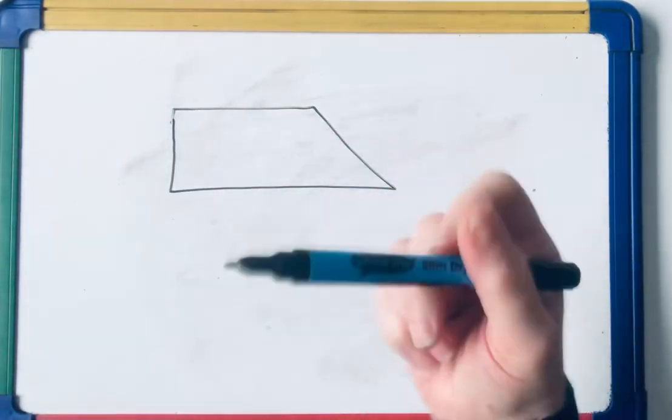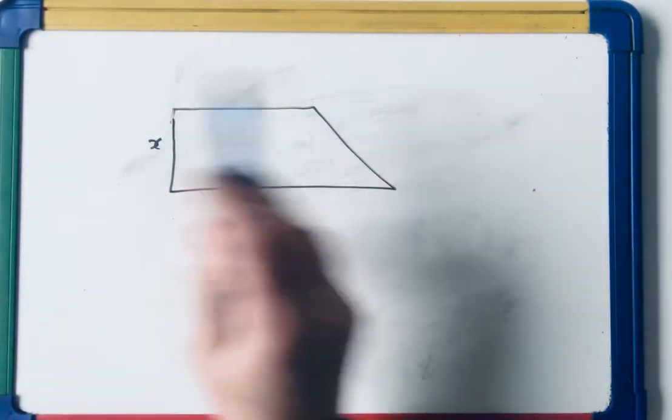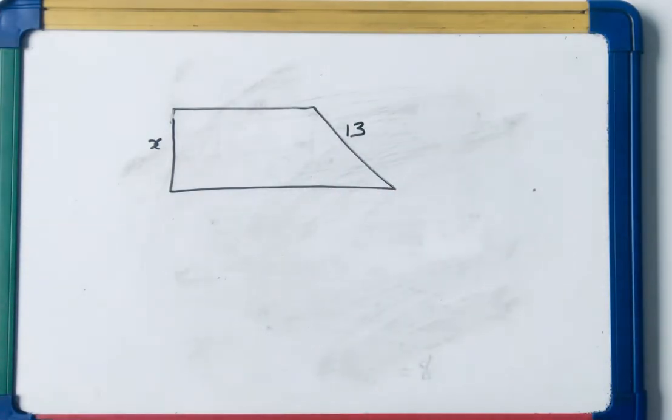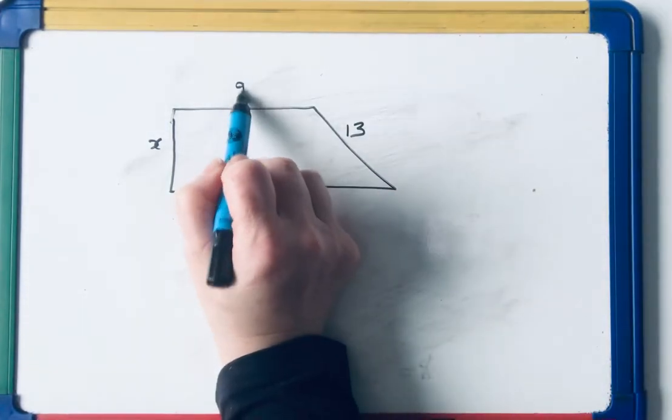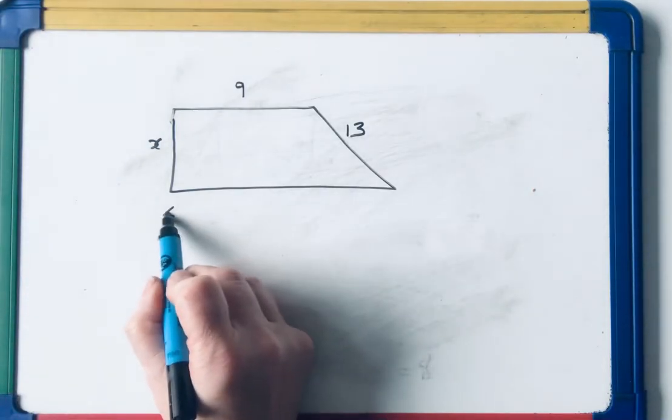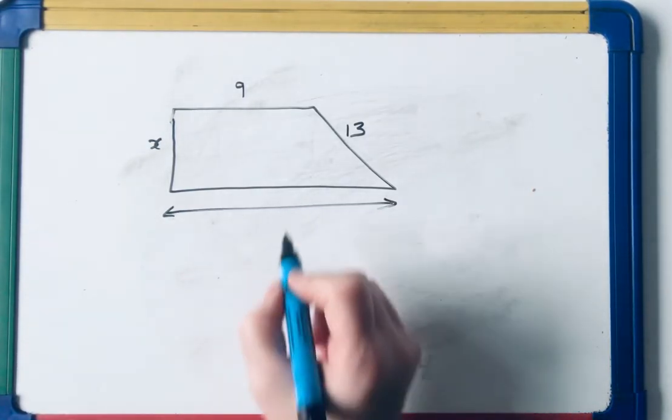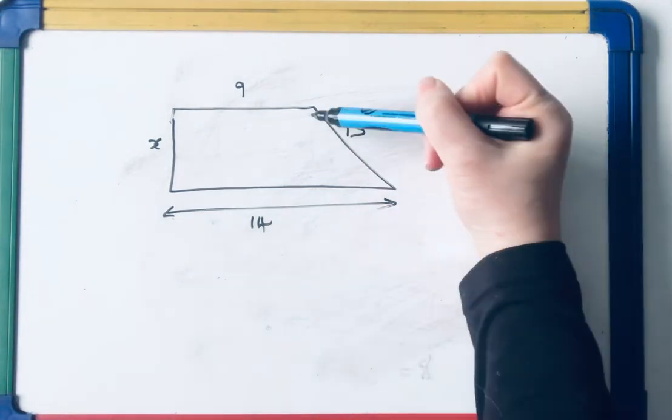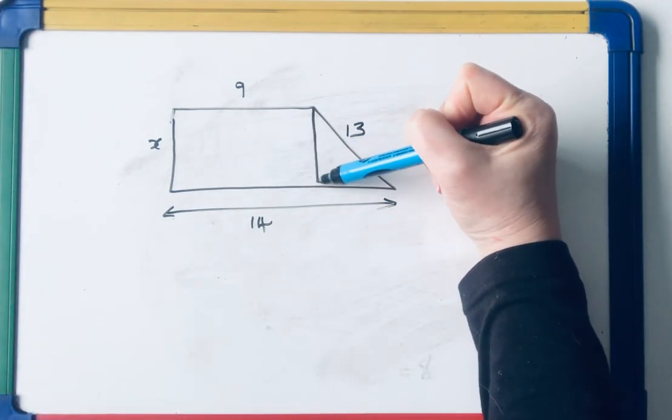Again, in order to find the height, you'd need to be given all the other dimensions. So let's have a slant height here of 13. That one could be 9, and all the way across there might be 14.